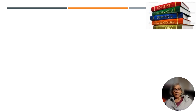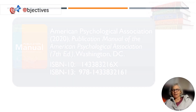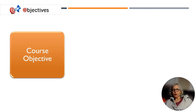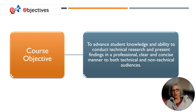The required textbook is the APA guide, 7th edition. The course objective is to advance student knowledge and ability to conduct technical research and present findings in a professional, clear, and concise manner to both technical and non-technical audiences.